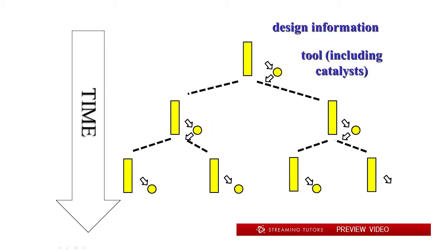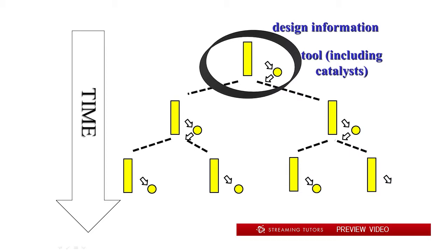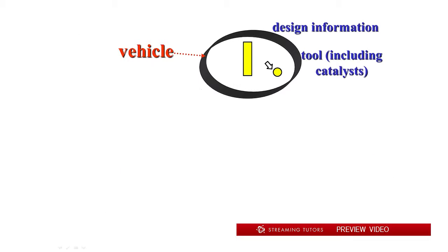We've talked about what some of those tools are. The combination of tools — which in the human case includes all of our bodies — and the design information, which includes our germline genetic design information, collectively we call that a vehicle. The vehicles are the context in which all of biochemistry, and in particular all of metabolism, is going to occur. So let's put metabolism in this context.